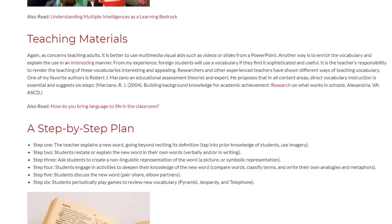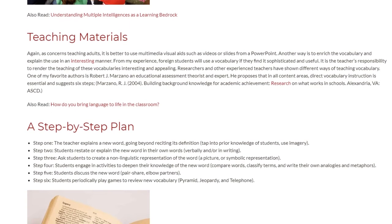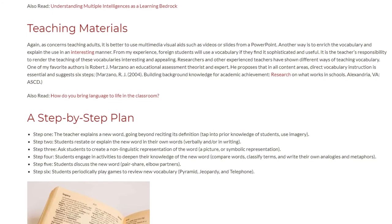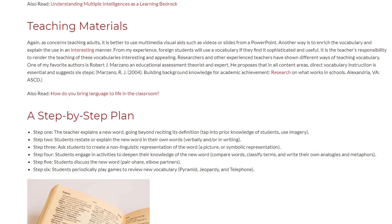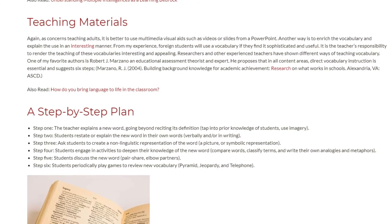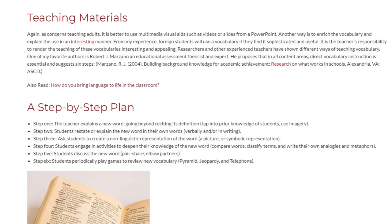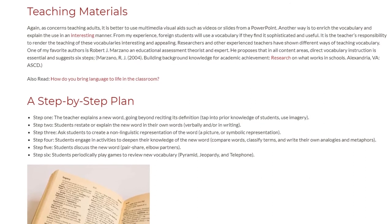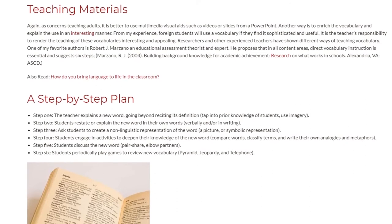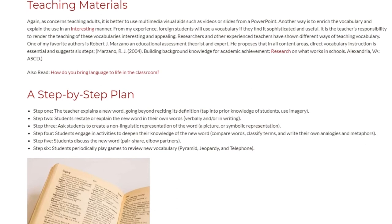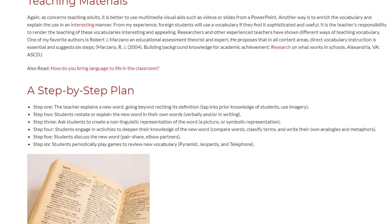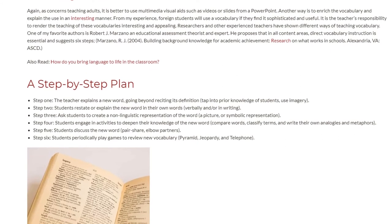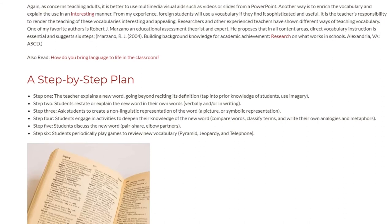Step 1: The teacher explains a new word, going beyond reciting its definition — tap into prior knowledge of students and use imagery. Step 2: Students restate or explain the new word in their own words, verbally and/or in writing. Step 3: Ask students to create a non-linguistic representation of the word — a picture or symbolic representation.